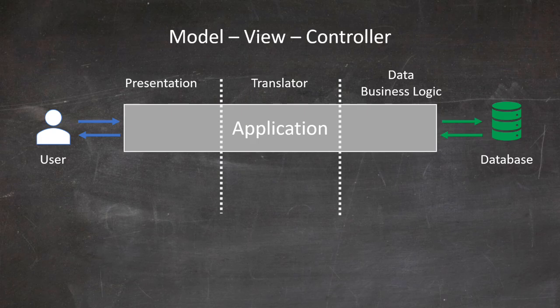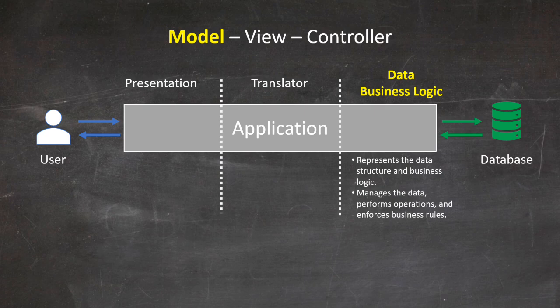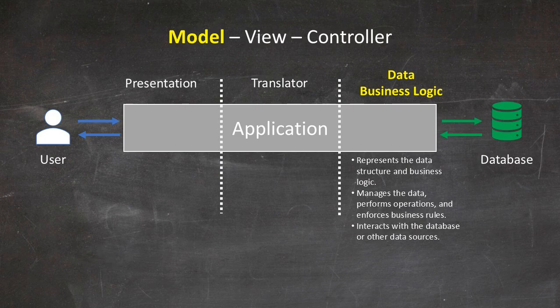Let's discuss briefly each layer of this design pattern, starting with the model. The model represents the data structure and the business logic. It manages the data, interacting with the database or other data sources, and it also enforces the business rules of the application.